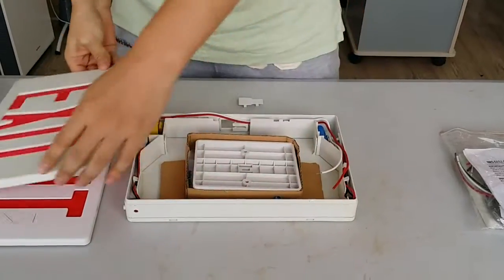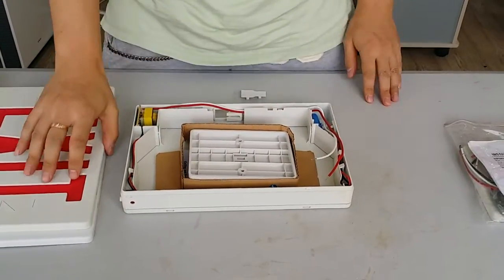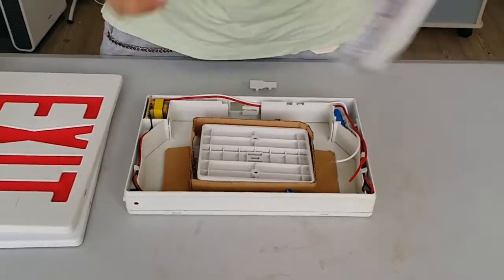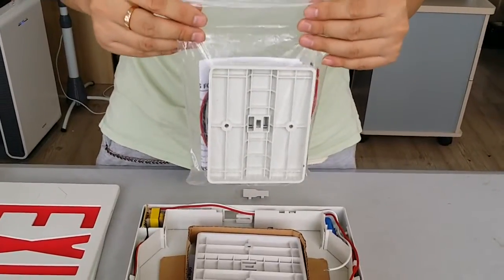This covers the panel. Inside the body, there are some basic accessories. Usually, we pack the accessories like this with a poly bag.